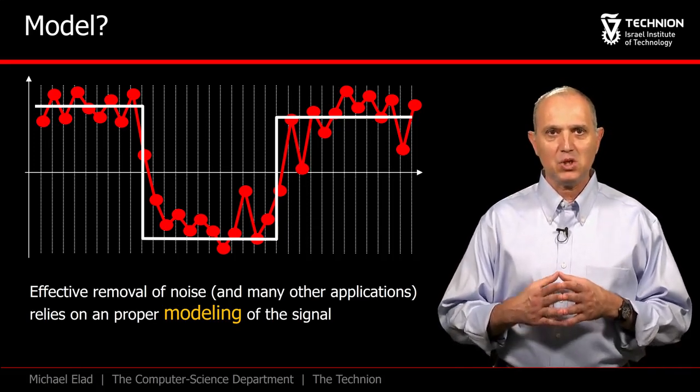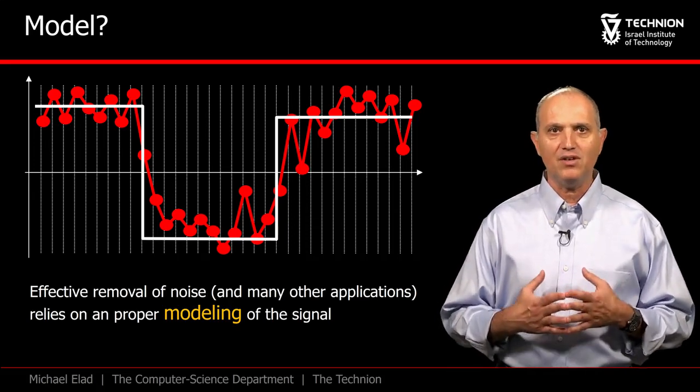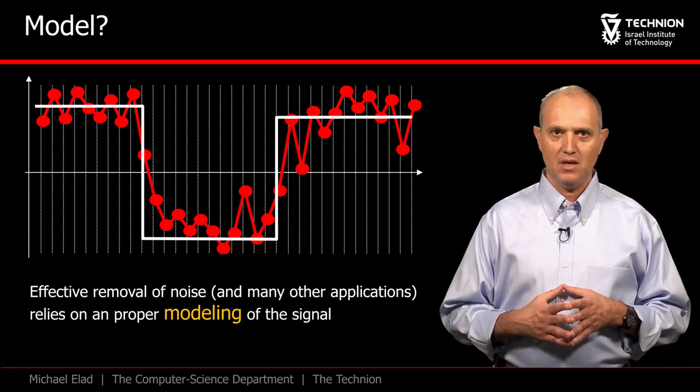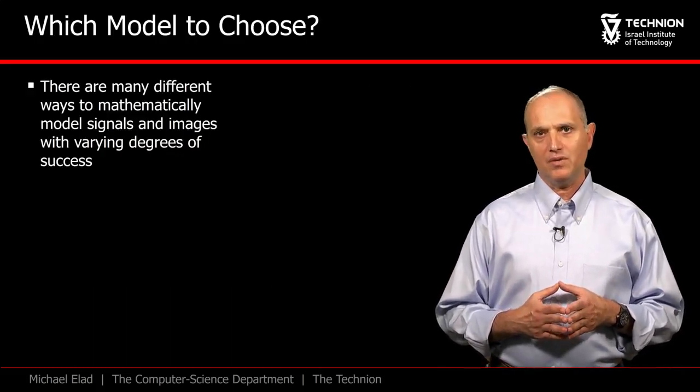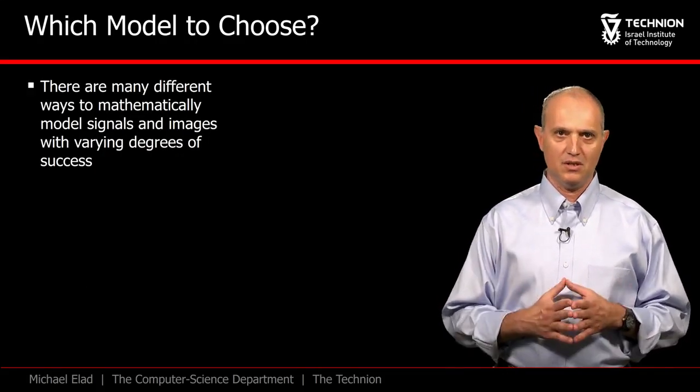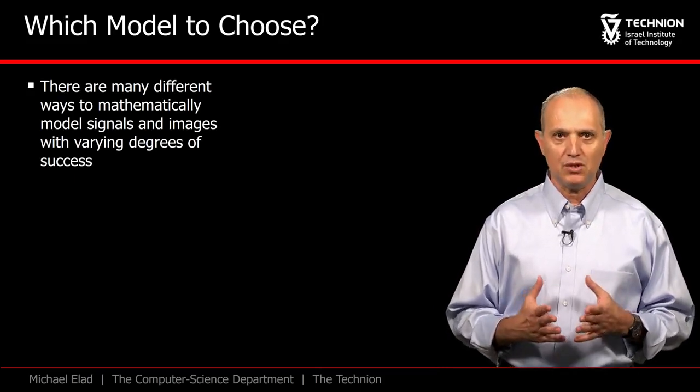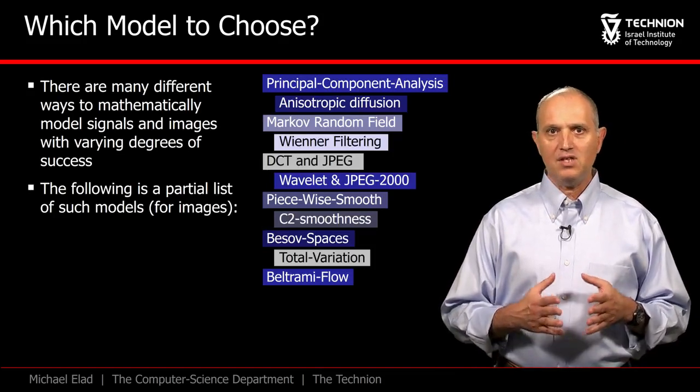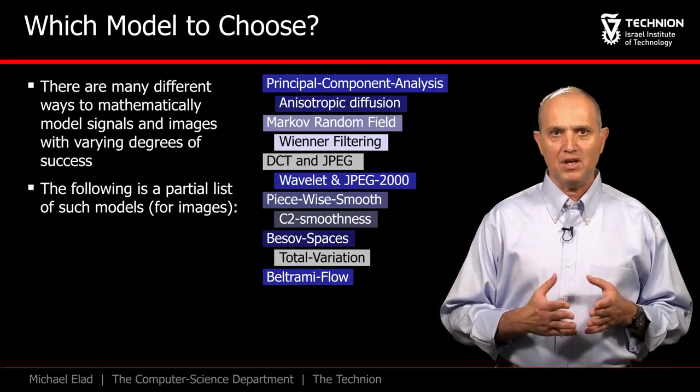Interestingly, such models are central not just for denoising. They are relevant for almost everything we do on data sources. There are many models out there aiming to serve signals of interest. Such models are typically given as mathematical descriptions of the rules the signals are believed to obey. For example, these are few of the popular models in image processing.